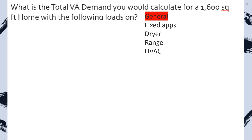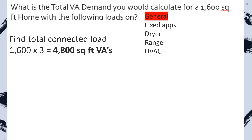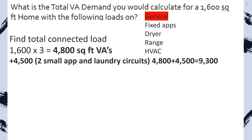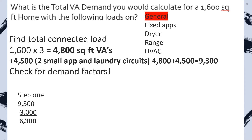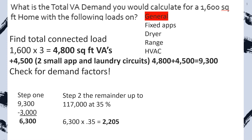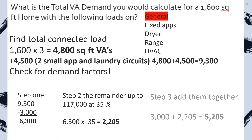Step 1 is to find our general lighting and receptacle loads. We're going to first find our total connected load. We take our 1,600 square feet multiplied by 3, which gives us 4,800 VA. Now we add on our two small appliance and one laundry circuit, which is 4,500, giving us a total connected load of 9,300. Now we check for demand factors: we take the first 3,000 at 100%, the remainder at 35%, then total them back together and put that on the right-hand side.